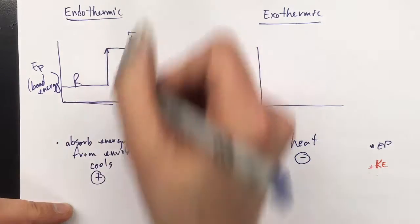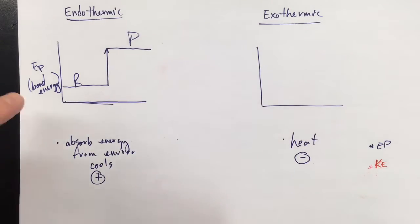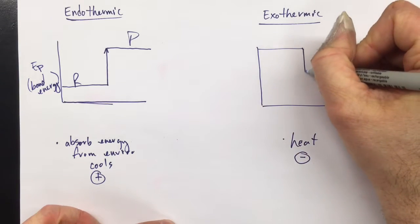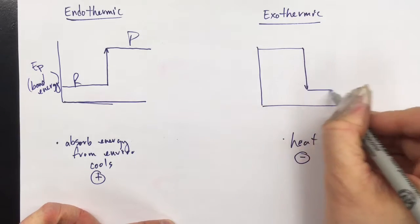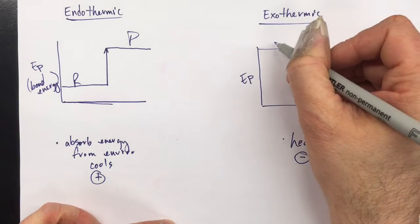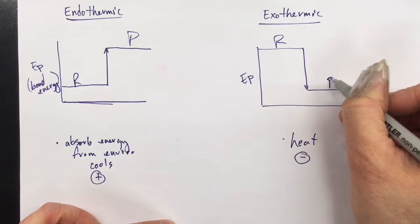If these are the reactants, these are the products, and the products have more potential energy than the reactants. In an exothermic reaction, we are getting energy to come off, so the potential energy, or bond energy, for the reactants is less than the products.